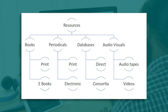In a typical library system or ecosystem, all these four verticals are taken care of, and all these different format resources are available in a typical library ecosystem.